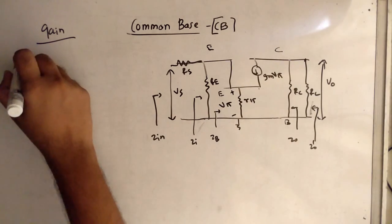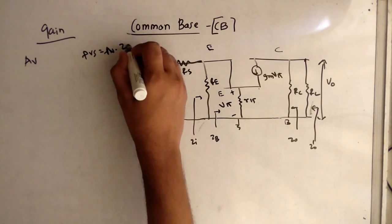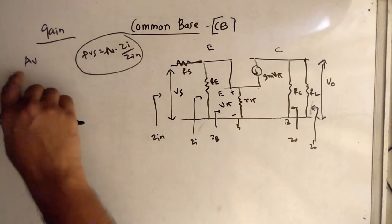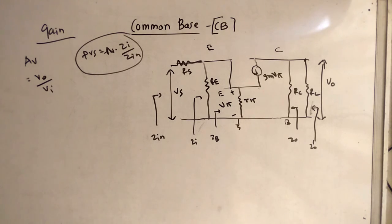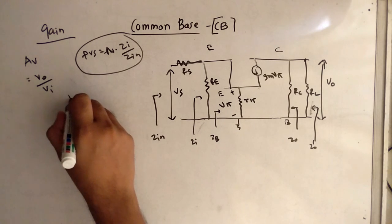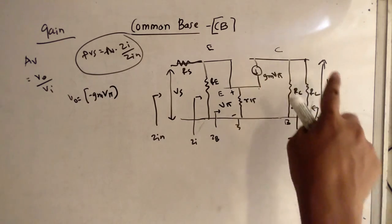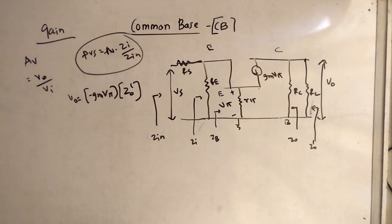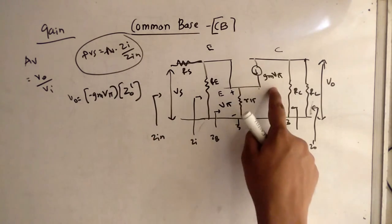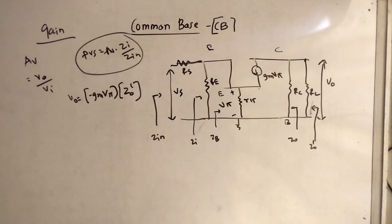Now let's talk about gain. There are two types: AV and AVS. AVS is AV times ZI divided by ZIN, so we must find AV. AV is VO divided by VI — output voltage divided by input voltage. The output voltage is minus GM Vpi multiplied by ZO', because V equals I times R, and the current flows in the opposite direction.